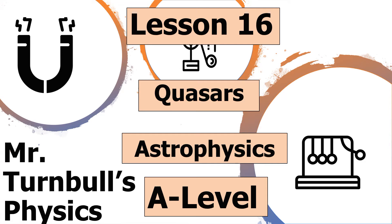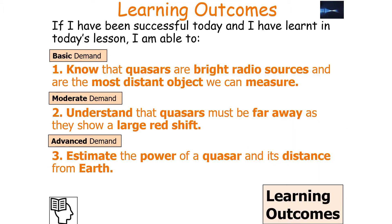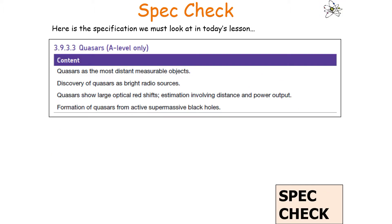Hello and welcome to today's lesson on quasars, which is part of the astrophysics topic in AQA A-level physics. In today's lesson we're going to look at the properties of quasars, understand that quasars are bright radio sources and are the most distant objects we can measure, understand that quasars must be far away as they show a large redshift, and estimate the power of a quasar and its distance from the Earth. This covers AQA A-level physics specification section 3.9.3.3.